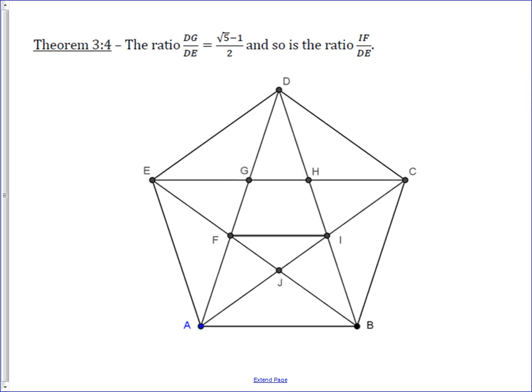This is a regular pentagon, and what we're going to do is show that there are some really significant relationships inside the regular pentagon. They turn out to be (√5 − 1)/2, which should remind you of the golden ratio, if you've dealt with the golden ratio before.